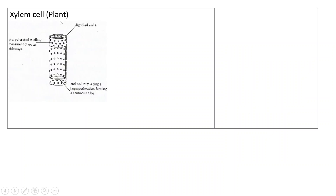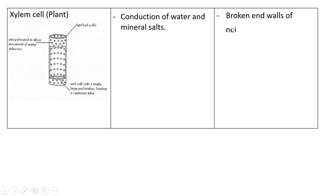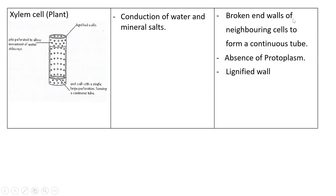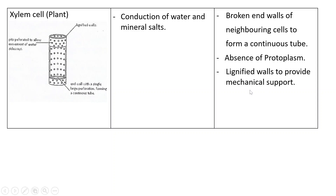The xylem cell, found in plants, has the function of conduction of water and mineral salts. Its specialization features include broken end walls of neighboring cells to form a continuous tube, absence of full protoplasm — meaning the cytoplasm, vacuole, and nucleus are absent — and lignified walls to provide mechanical support. These walls are hardened because they are made of a substance known as lignin.